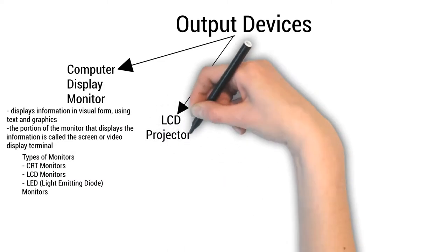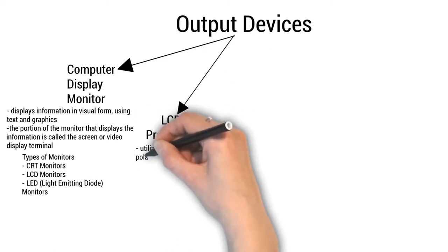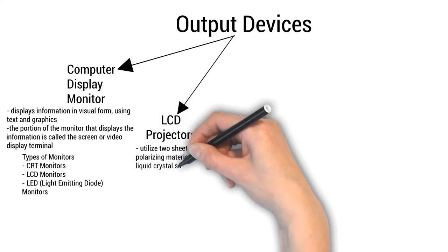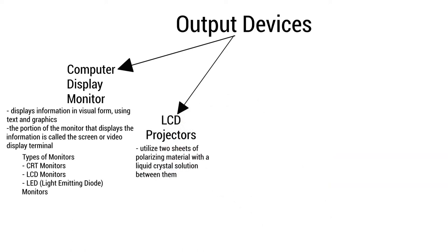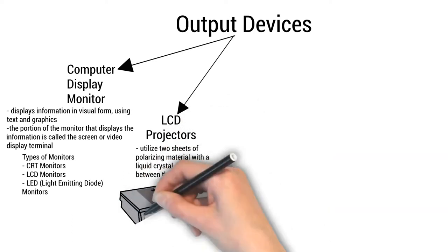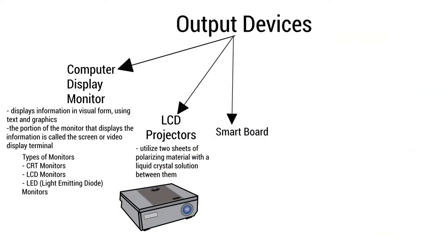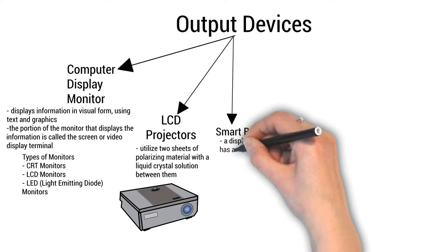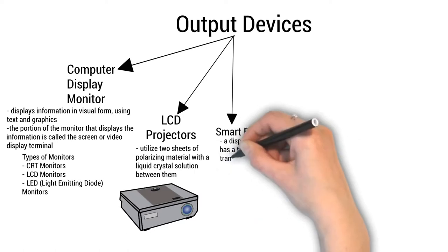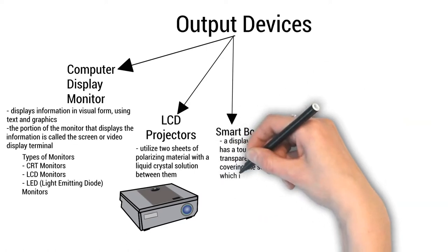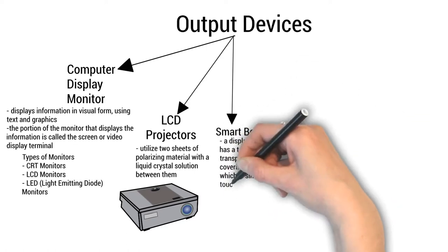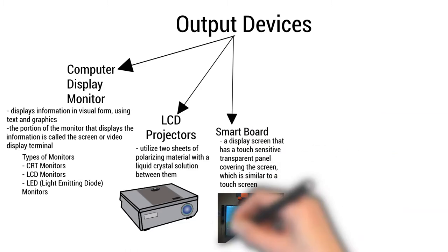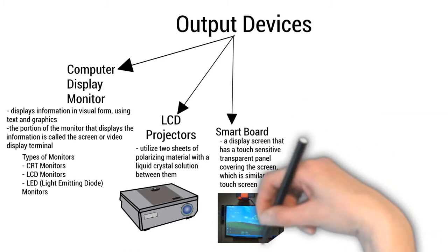LCD Projectors utilize two sheets of polarizing material with a liquid crystal solution between them. A Smartboard is a type of display screen that has a touch-sensitive transparent panel covering the screen, which is similar to a touch screen.